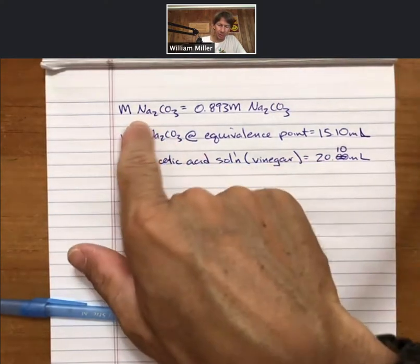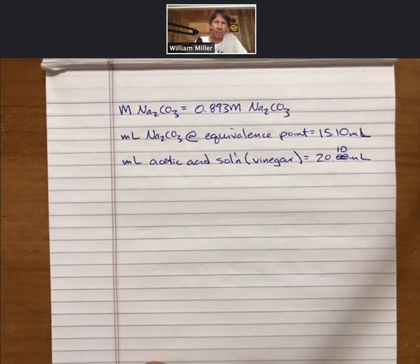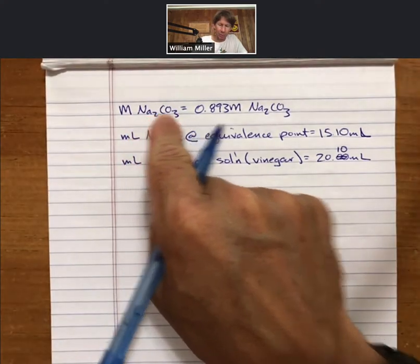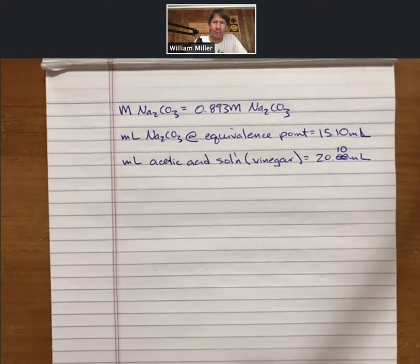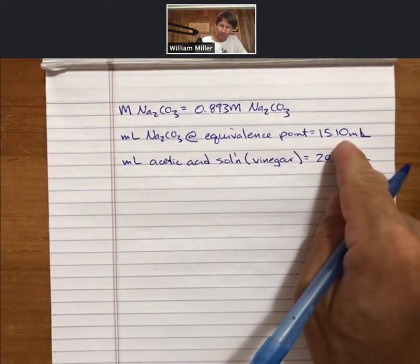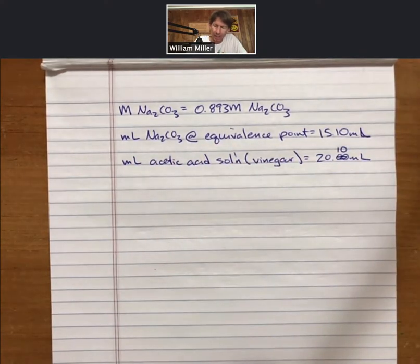I've got a summary of the results I've gotten from this and previous labs right down here. I know from experiment 4 that the solution I made is 0.893 molar sodium carbonate. From my graphical determination of the equivalence point, I have determined that I needed 15.10 milliliters of sodium carbonate to get there.